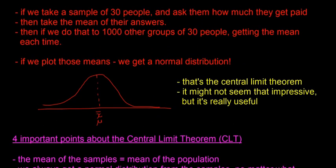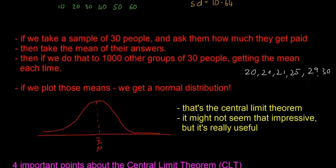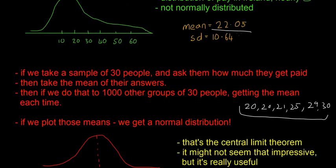We got samples of 30 people and did a thousand of those different samples. When we get the mean each time, some means are going to be 20, 21, 25, 29, 30 — there are going to be a thousand different numbers. But if we get the mean of all of those numbers, the answer we'll get is going to be 22.05 every single time. As long as we have enough samples, the mean will always be 22.05.